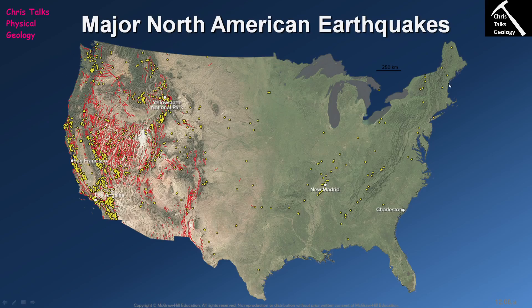In front of us you can see an image of the United States onto which we have superimposed the position of earthquake activity in the form of yellow circles. Straight away you have probably spotted there is a substantial difference in the amount of earthquake activity when you compare the eastern side to the western side of the United States. So the first question we need to answer is why is the western side so active with regards to earthquakes?